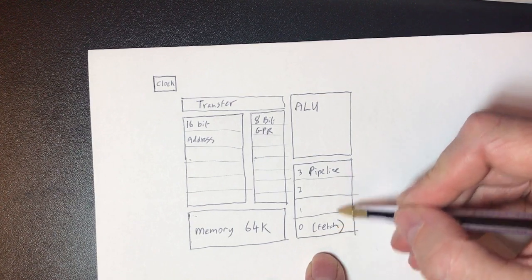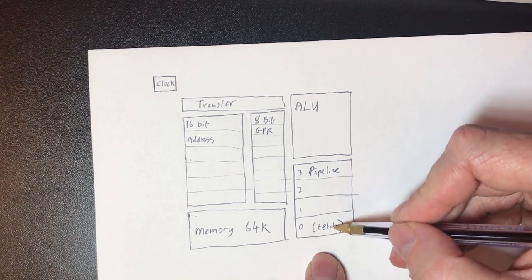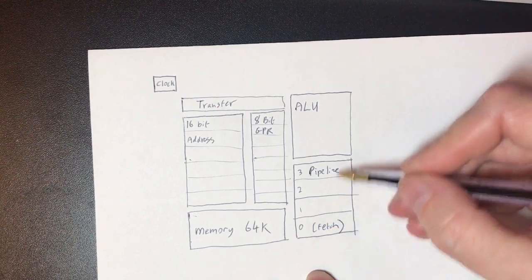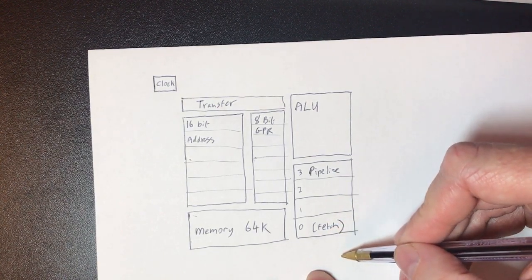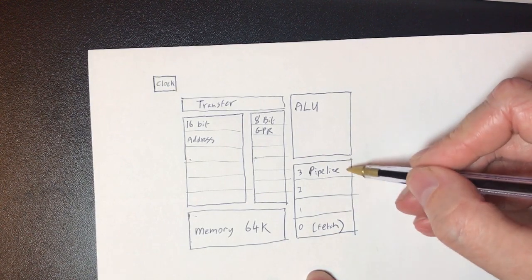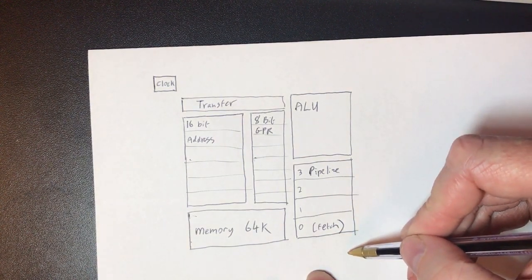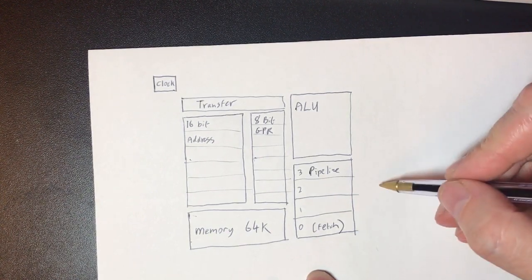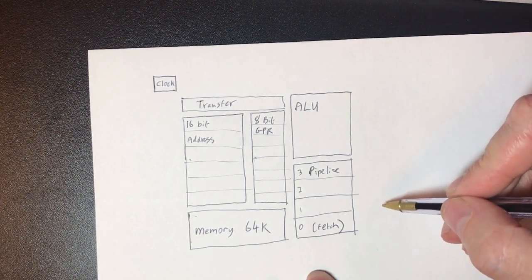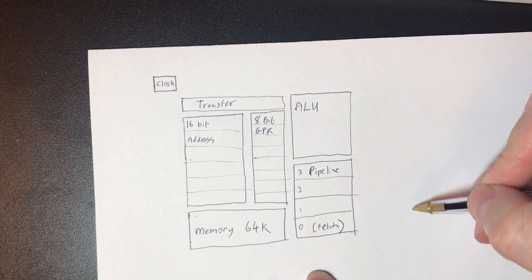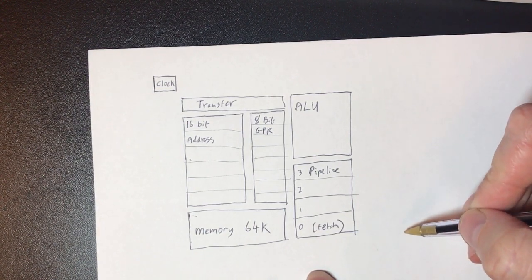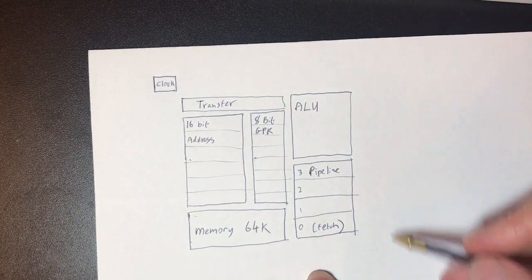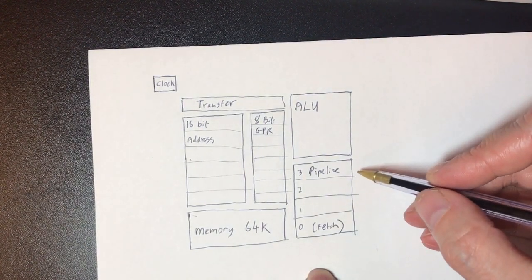As an instruction moves on, you hopefully fetch a fresh instruction into the first stage and this way you get multiple instructions executing concurrently and hopefully you move upwards to a point where you've got a lot more throughput from your CPU. So this is a bit I'm really quite excited about playing with but I've got a long way to go before I get there.